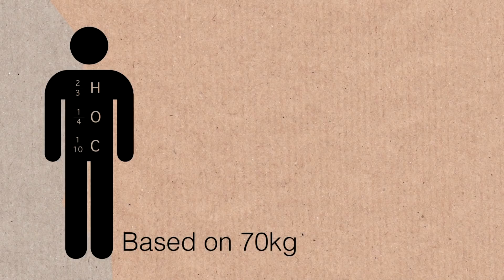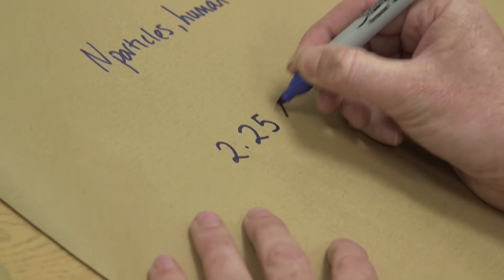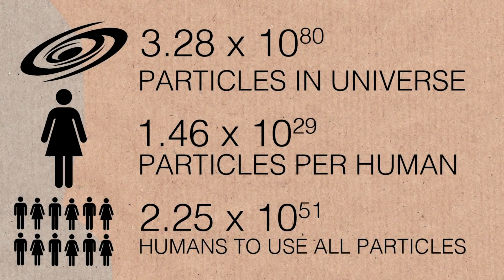Another fun thing to consider: how many particles are in a typical human body? We know the human body is about two-thirds hydrogen and about a quarter oxygen. Working through the same approach, the number of particles in a human body is about 1.46 times 10 to the 29. And to use up all the particles in the universe in the form of humans, you'd need about 2.25 times 10 to the 51 humans.